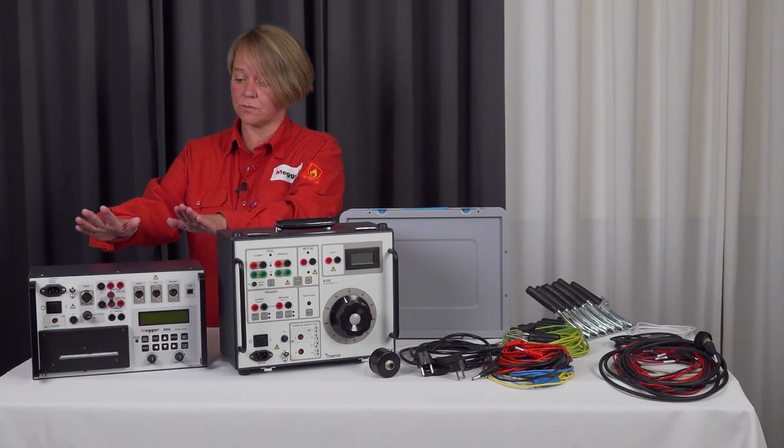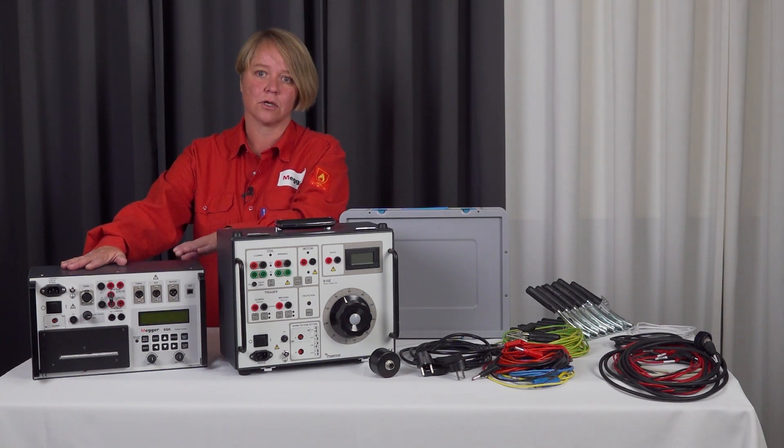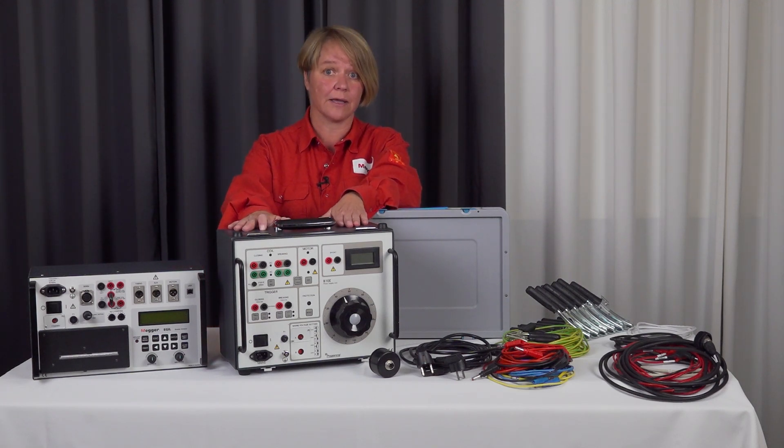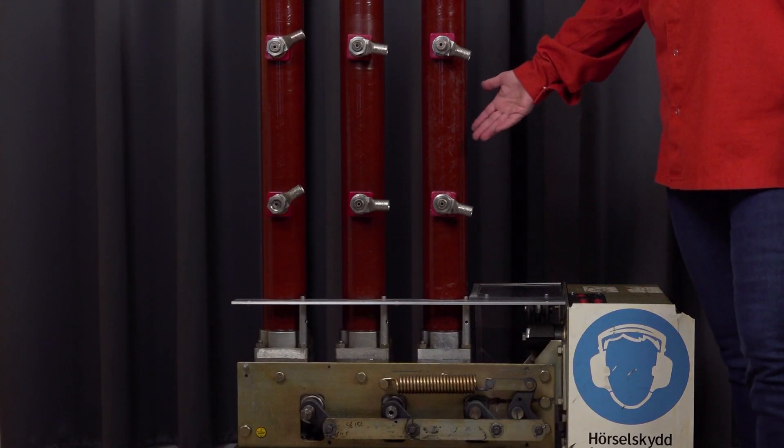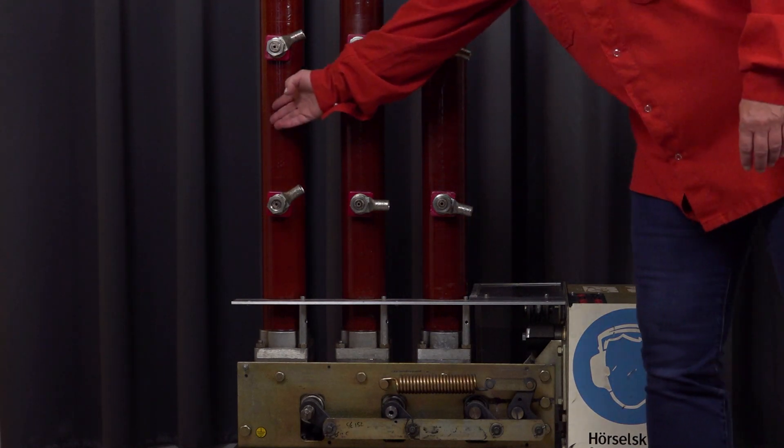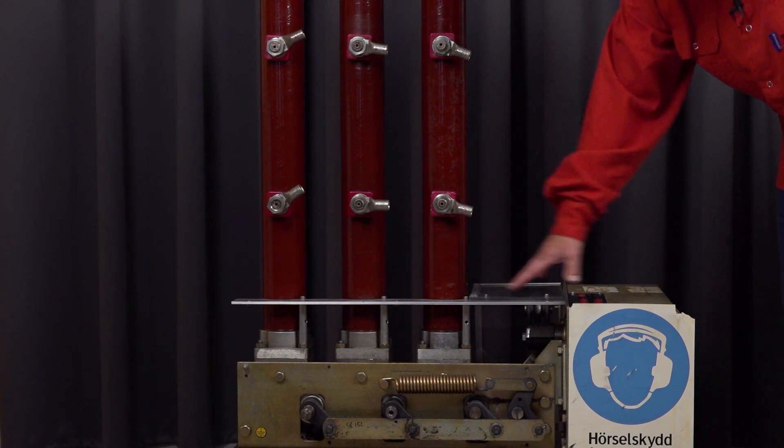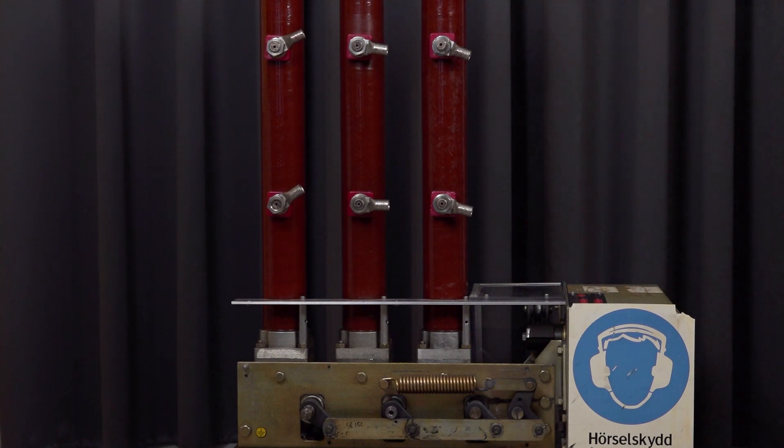EGIL is a small timer which can do timing, motion, and also measure the coil currents. Today we're also going to use B10E which we need to supply the coils and also the motor charging. We're going to measure on a circuit breaker, a 12 kV medium voltage breaker. It has three phases, the upper and the lower contacts. It has a motor mechanism, a common mechanism for all three phases.